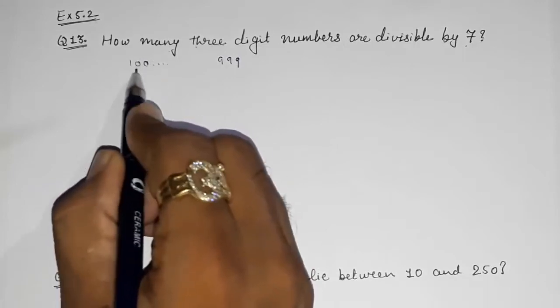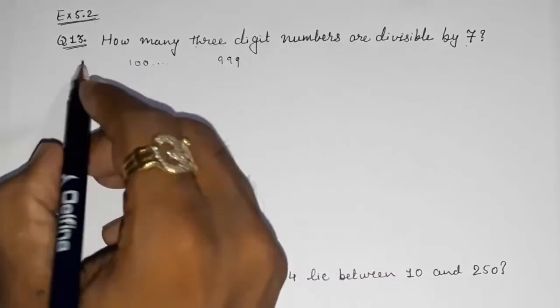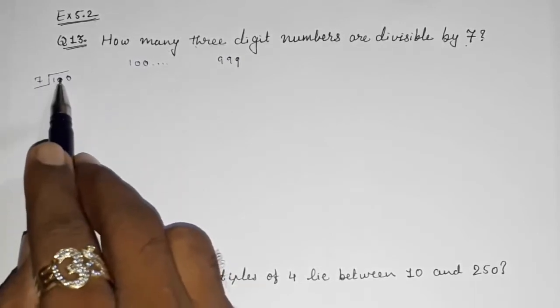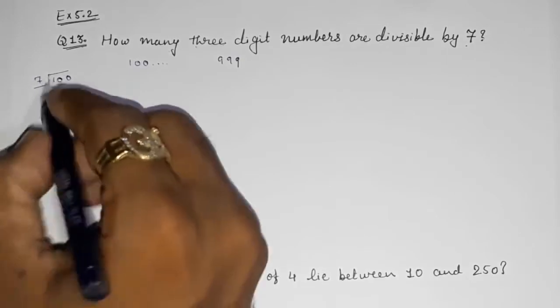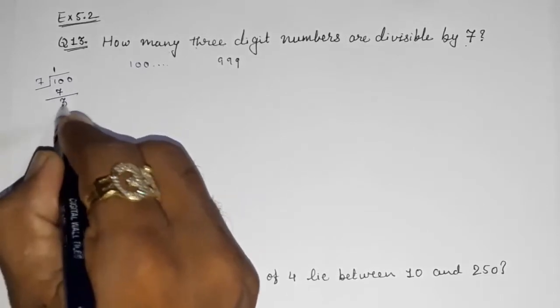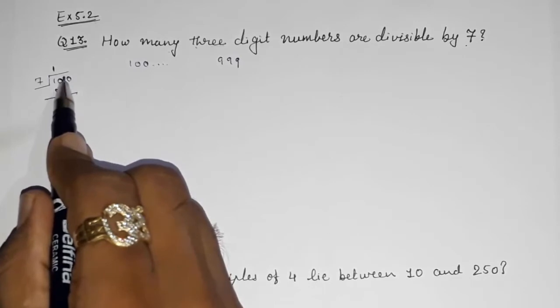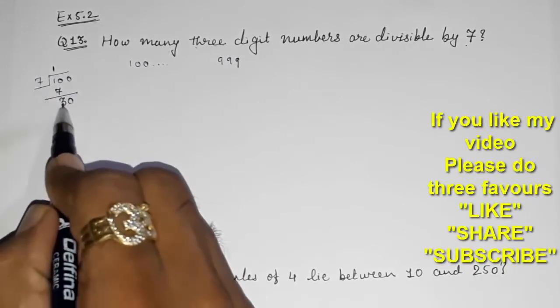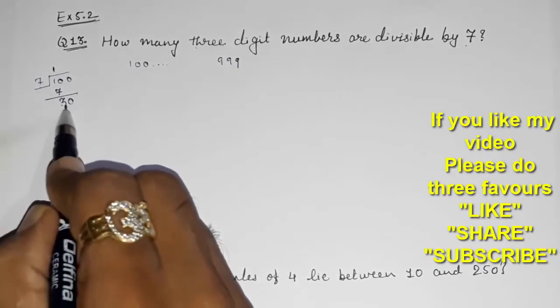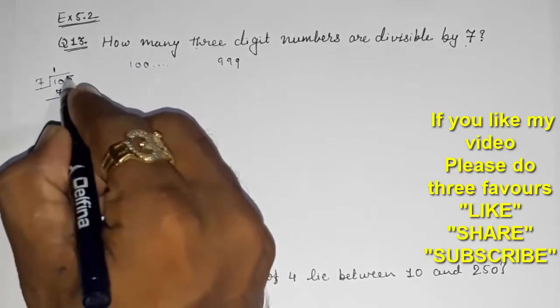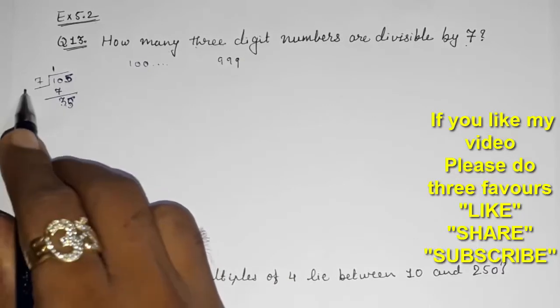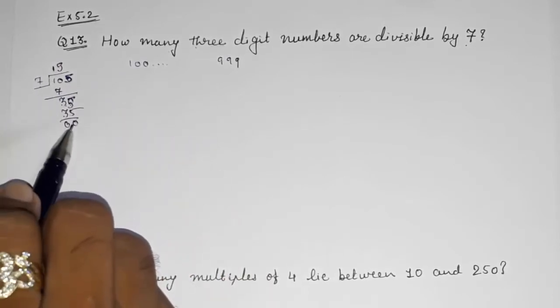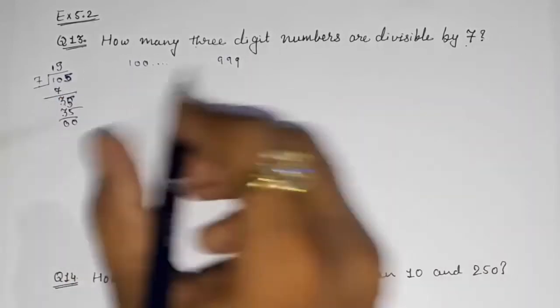We are going to divide 100 by 7, and what we have to keep in mind is that we have to get remainder 0. So 7 ones are 7, now 30 is there. After 30, which number is perfectly divisible by 7? 35. So instead of this 0, if I put 5 here, this will get perfectly divisible by 7. So our first number that is divisible by 7 will be 105.